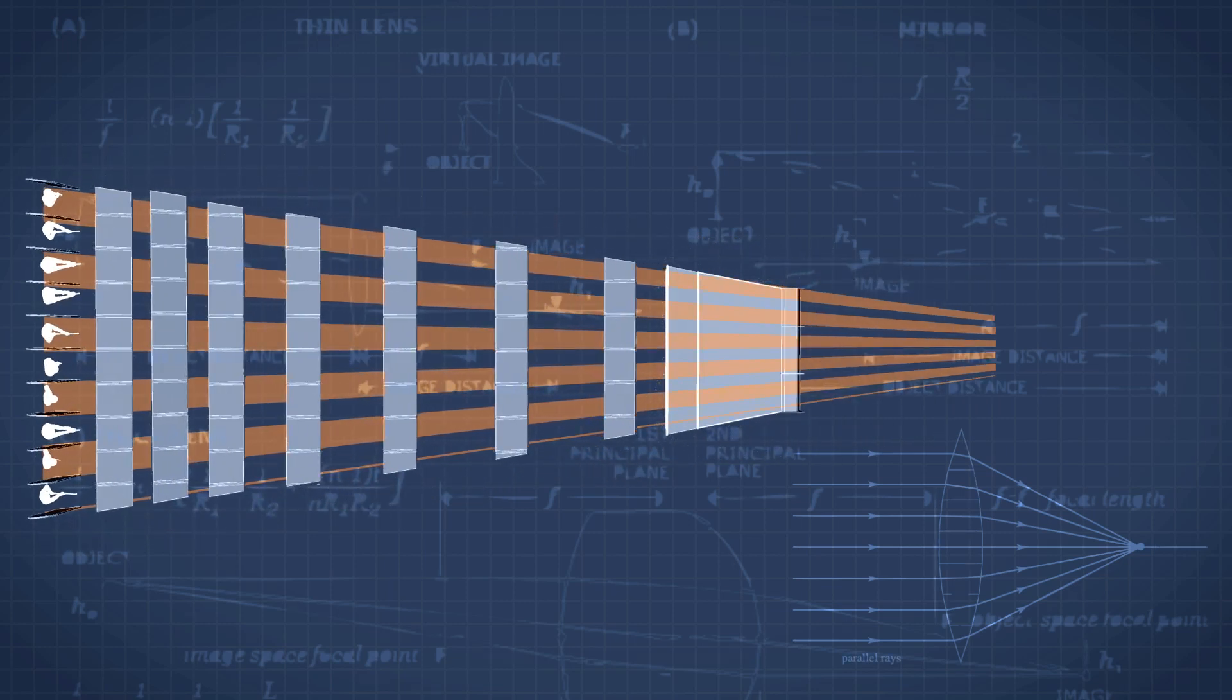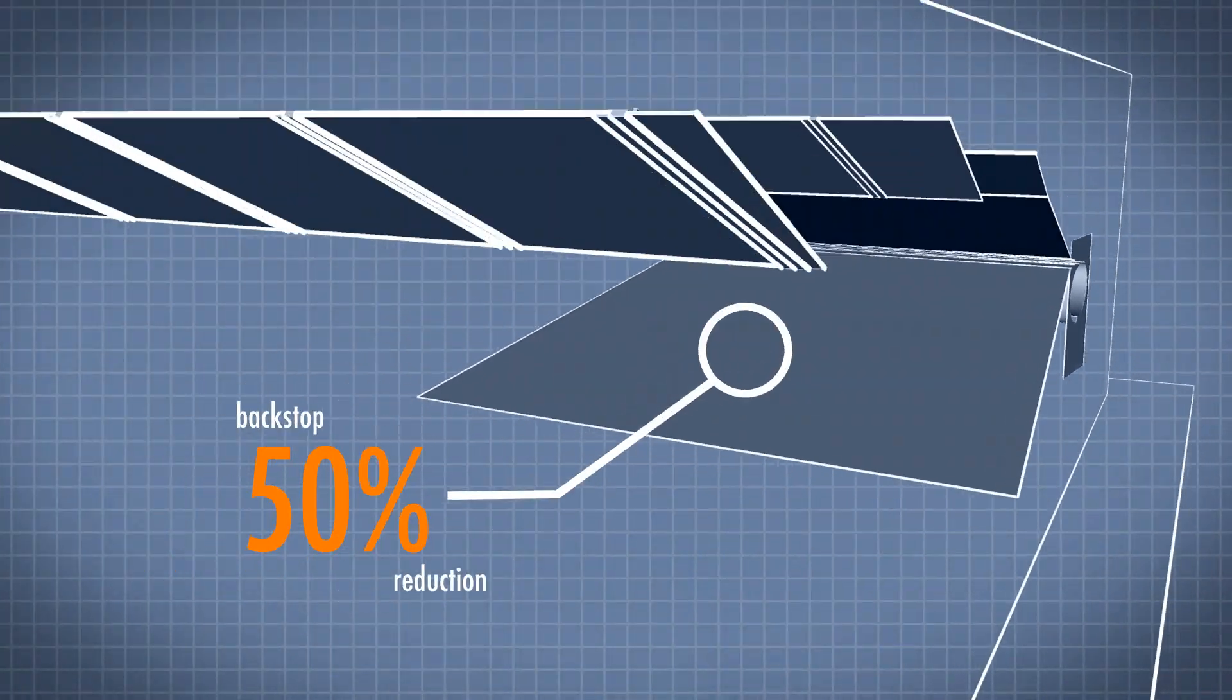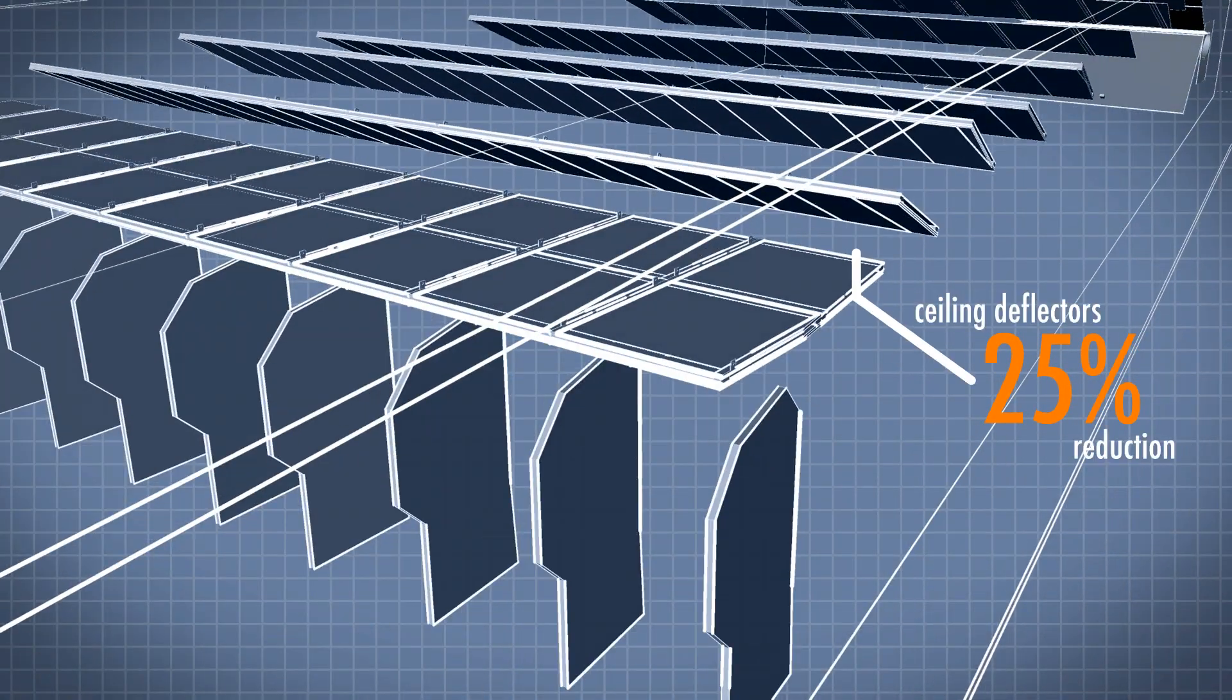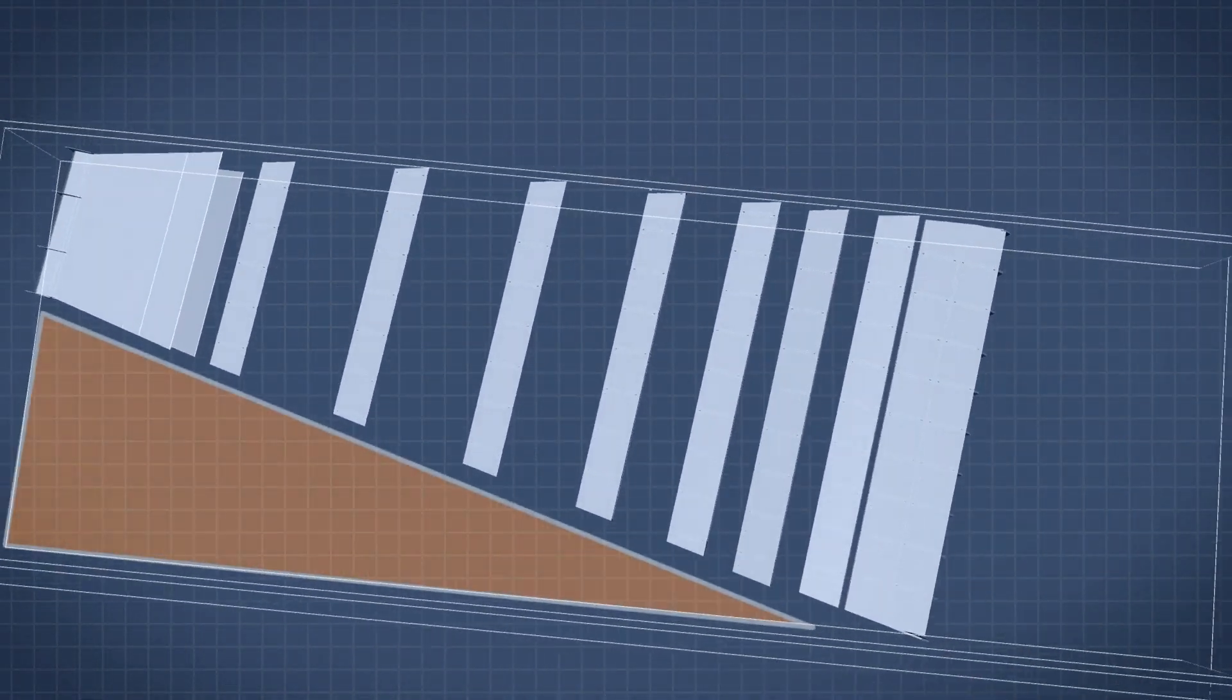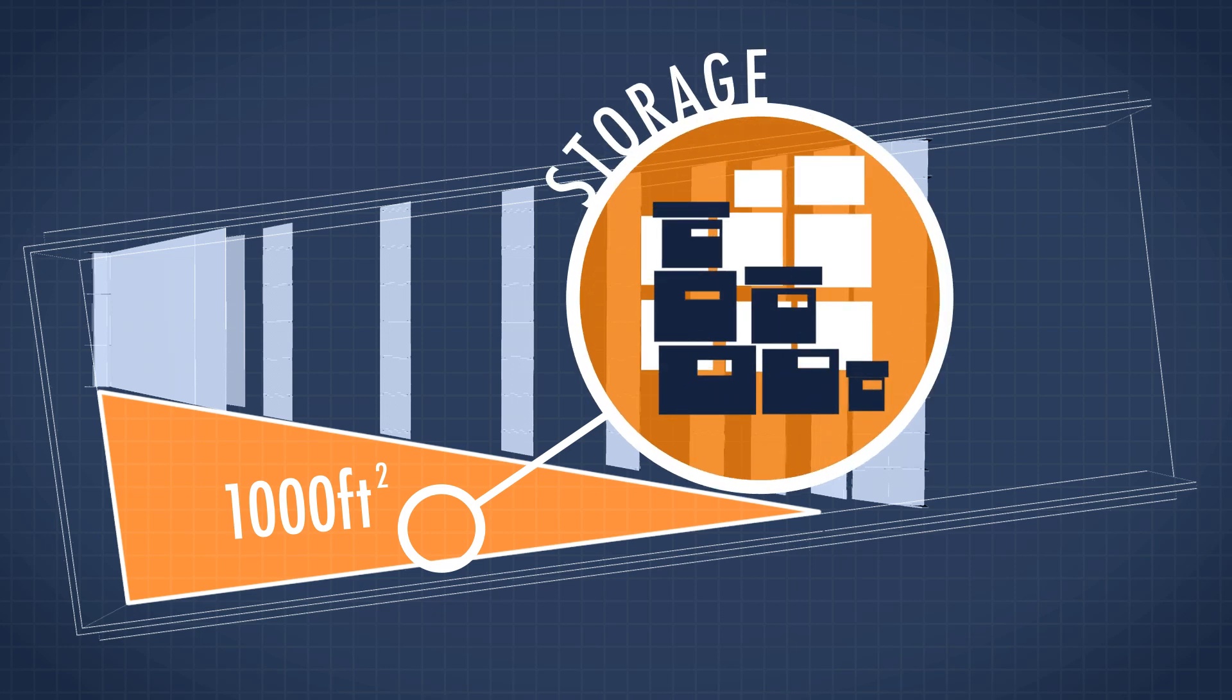Our solution reconfigures the traditional layout by creating a focal point which reduces the backstop by 50% and the ceiling deflectors by 25%. The patent-pending configuration also created an additional 1,000 square feet of much-needed retail or storage area.